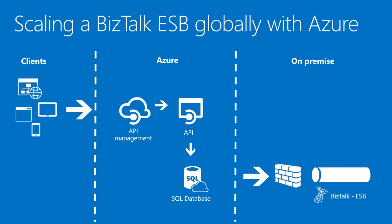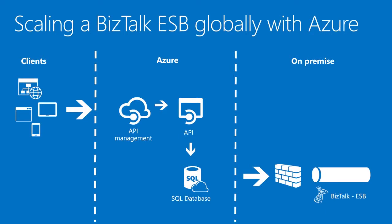This is the demo I'm going to do today. On premise, you have the ESB, BizTalk, and itineraries. I'm using the ESB toolkit, but you can also use normal BizTalk. They want to expose their services to the cloud, so I've created an extra API with API management in front of it. The data I'm storing in a SQL database — it can also be Service Bus or anything else, but I'm using a database.